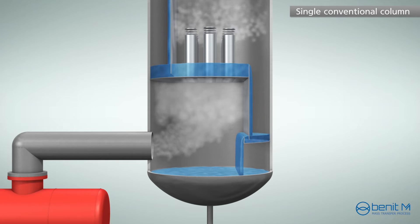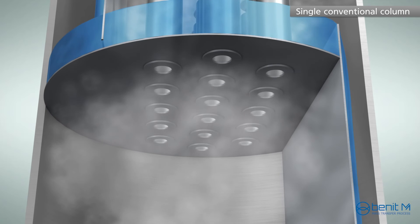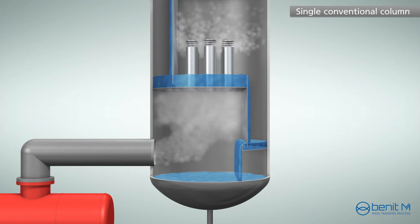Uniform vapor distribution is very important, especially in packed columns. It is recommended to design the chimney tray to have a proper pressure drop for the even vapor distribution. In a chimney tray with a fixed open area, the developed vapor distribution might be acceptable at the designed vapor rate.